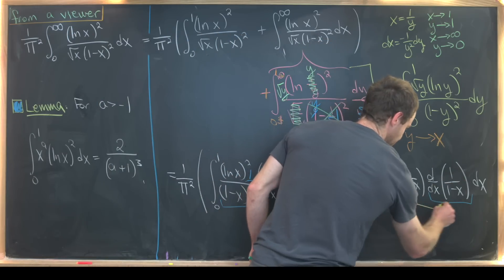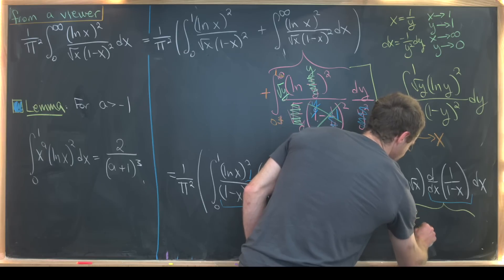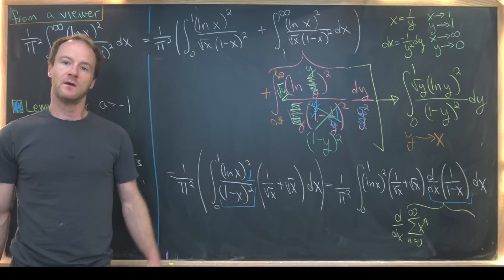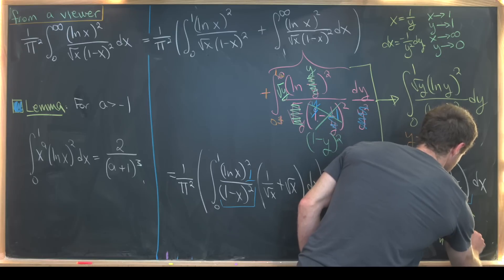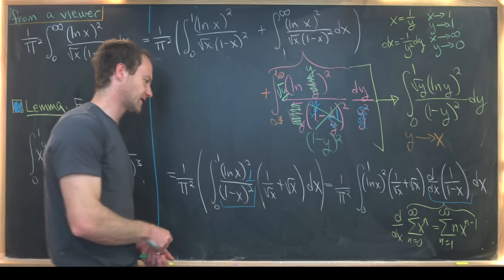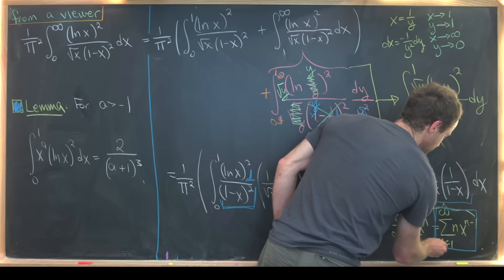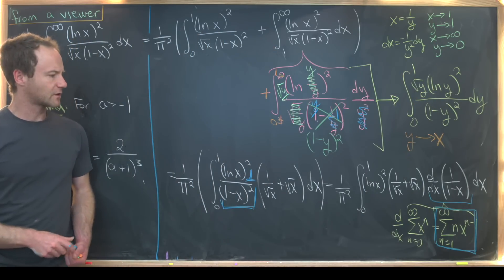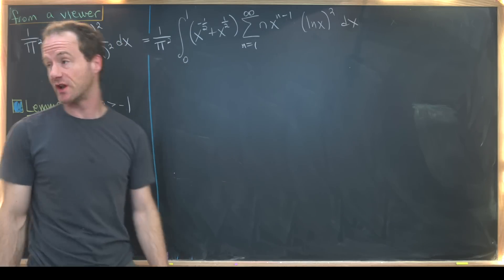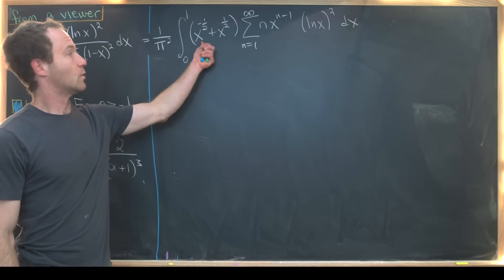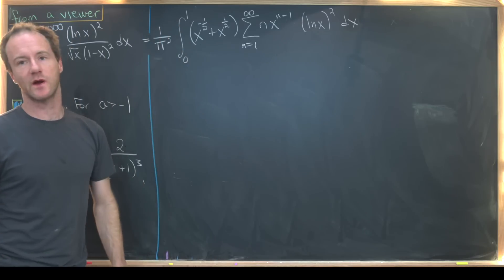The derivative of 1 over (1 minus x) expands via the geometric series: the derivative of the sum from n=0 to infinity of x^n, which by term-by-term differentiation equals the sum from n=1 to infinity of n times x to the (n minus 1). So all of that blue expression — 1 over (1 minus x)² — can be replaced with this series.